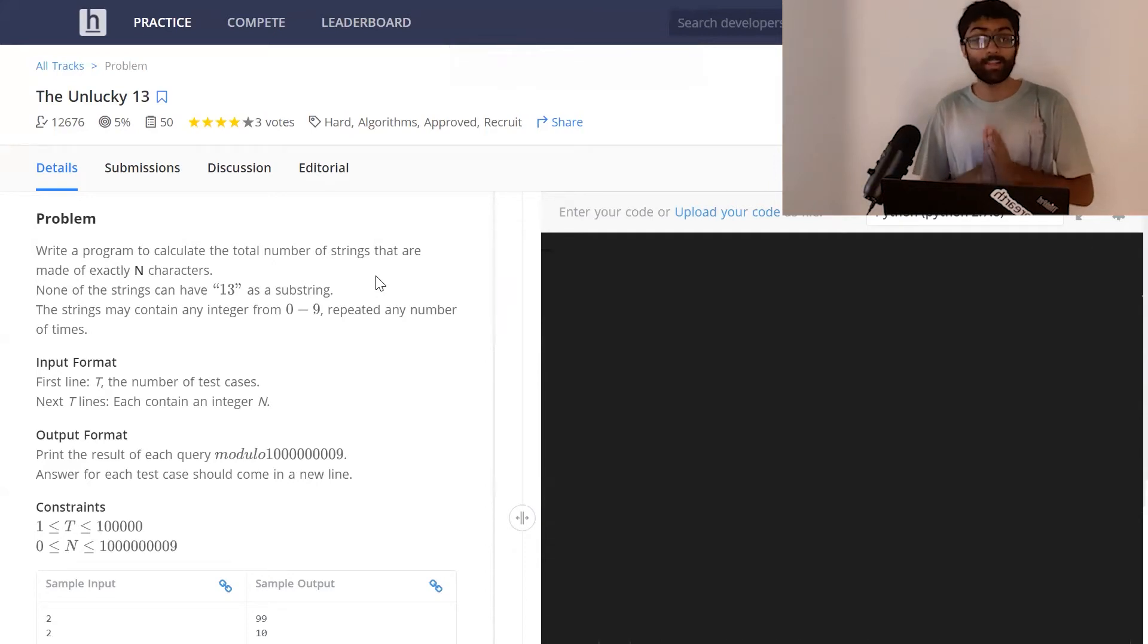Welcome to the final problem in arrays and strings: the Unlucky 13. This is a really hard problem, the only hard level problem in this lesson. It combines many concepts—math concepts and programming concepts—and we've got to bring them all together to get the most optimal solution.